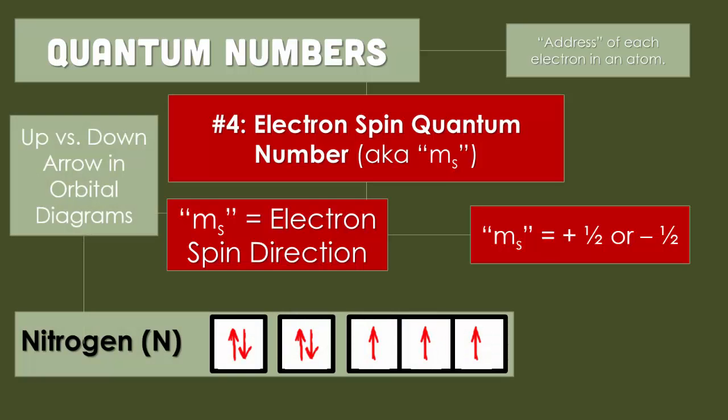For our fourth and final quantum number, we talk about electron spin, which is m with a little s. The spin identifies the electron spin direction, using Hund's rule from a previous video. You can either use positive one-half or negative one-half. These are the two values for this electron spin number. When you look at orbital diagrams, it's the difference between an up and down arrow. Arrows facing upward are positive one-half spin, arrows going downward are negative one-half spin.